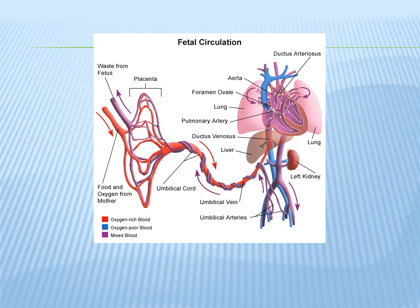In the right atrium we find the second shunt — the foramen ovale — located between the right and left atria. The majority of blood coming up from the inferior vena cava, about 90%, flows through the foramen ovale directly into the left atria via a one-way leaflet valve that prevents backflow. Blood then goes from the left atria to the left ventricle and out the aorta.